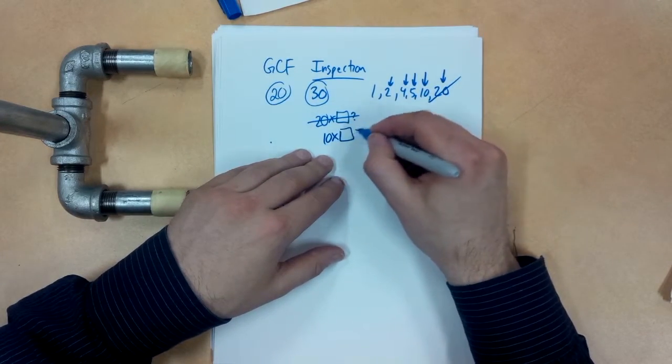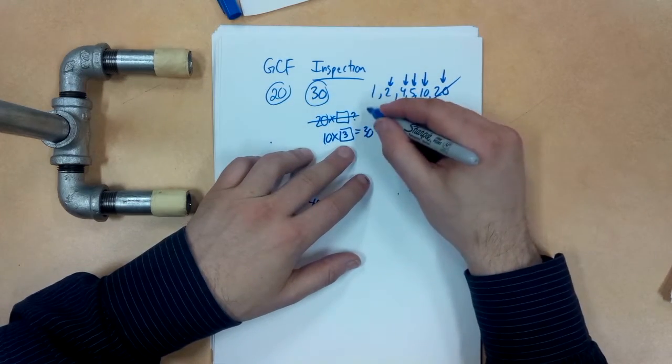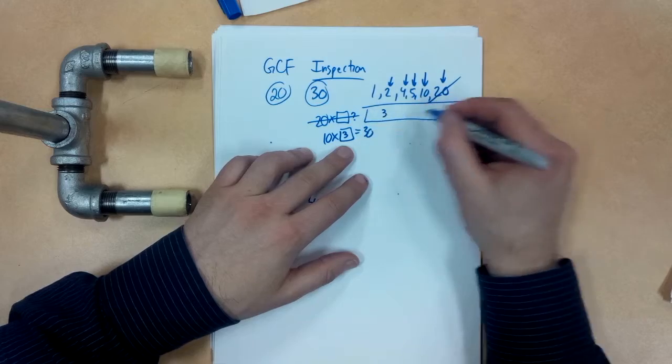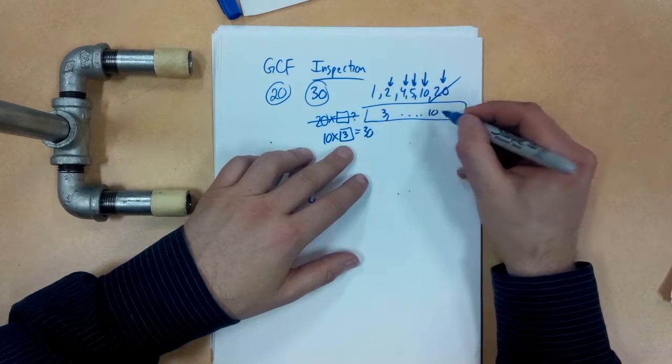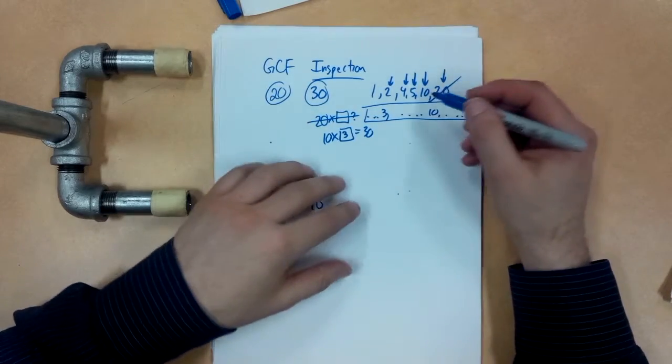but what about 10? Can I do 10 times something, give me 30? And the answer is yes, of course you can, 10 times 3. So somehow in the list of 30, we know we have a 3 and a 10. Okay, the rest of it to us doesn't really matter right now, we just saved a bunch of time.